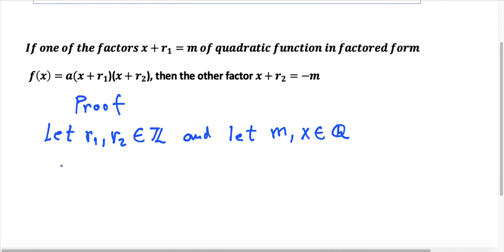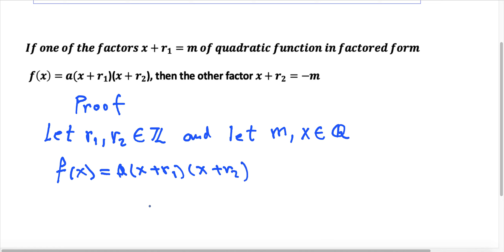Let me rewrite the quadratic function in factored form: f(x) = a times (x plus r1) times (x plus r2). Now we want to find the roots. The one root x1 is going to be equal to minus r1, and the other root x2 is going to be equal to minus r2.